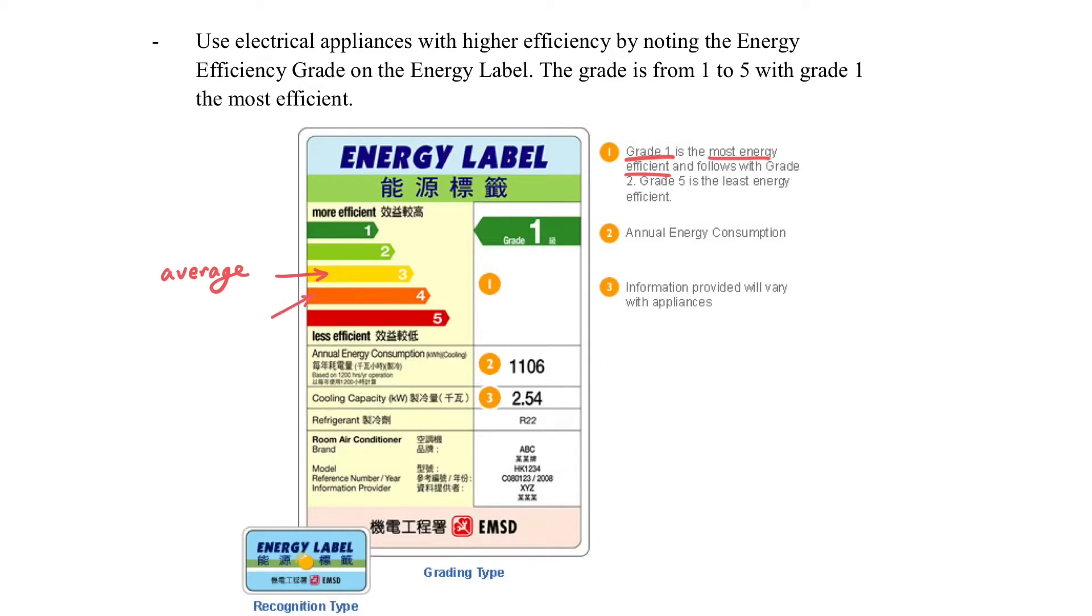And grade 3 is on average. That means compared with the others, it is the same, of the use of energy. And for the level 4 and the level 5, it is actually less efficient than the average already.